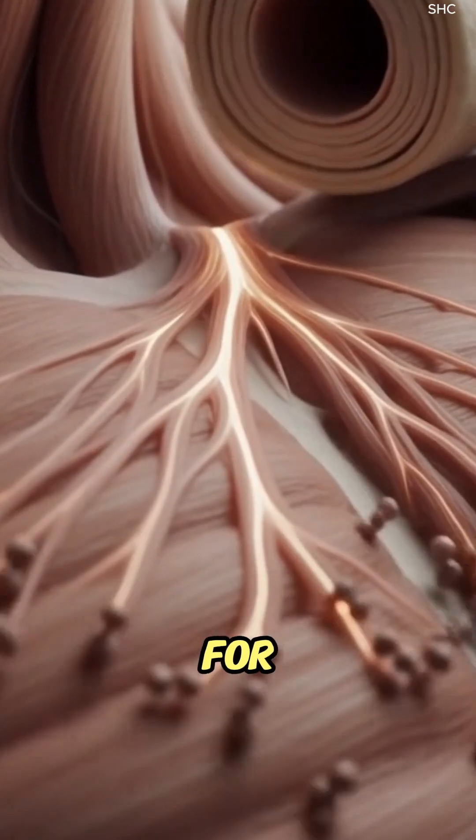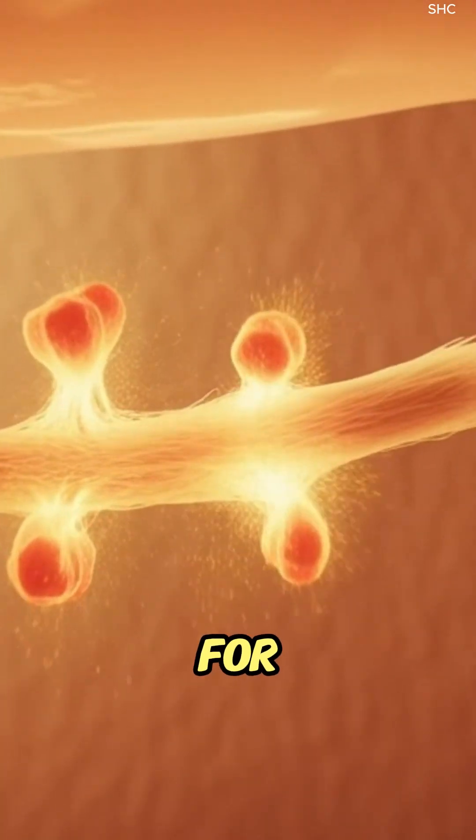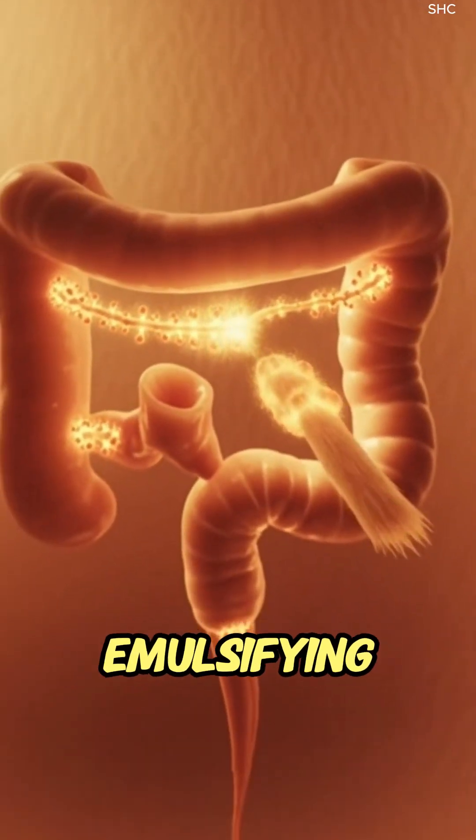Beans and rice break into glucose for energy, proteins unravel into amino acids for muscle repair, and healthy fats begin emulsifying.